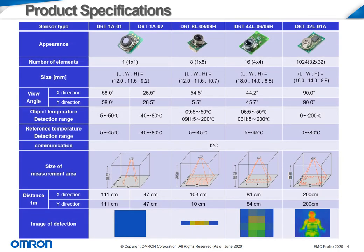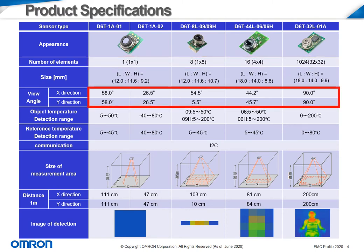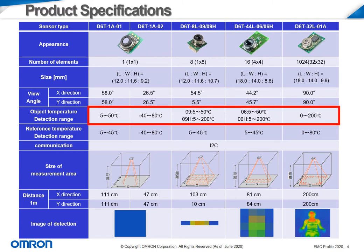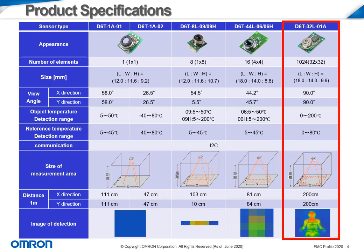We will go over each of the sensors that OMRON has available within the D6T series. Each of these sensors offers their own advantages in various situations, including the number of pixels output in the raw data, field of view viewing angle, and object temperature detection range. Recently, OMRON has released newer high temp versions of the 4x4 pixel series and the 1x8 pixel series. OMRON's latest version of the D6T sensor is the 32x32 pixel version, offering high temperature capabilities detecting objects up to 200 degrees Celsius, and a much higher resolution picture compared to the other components in this part family.